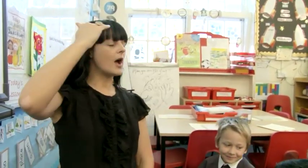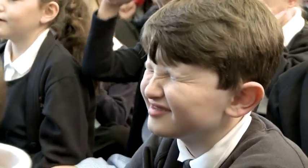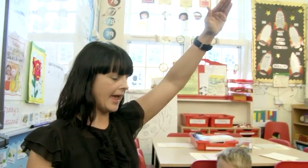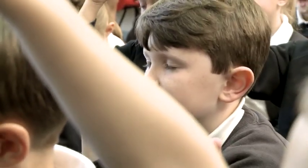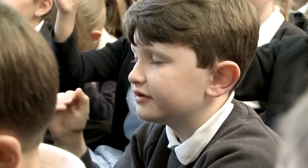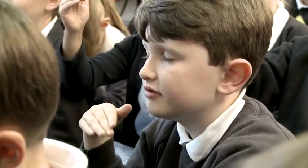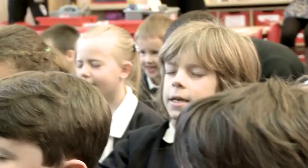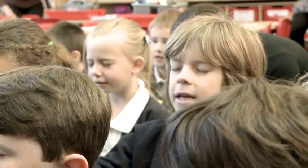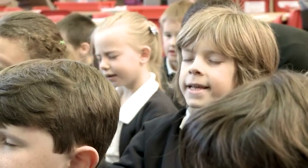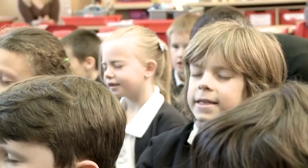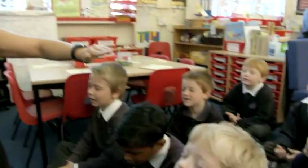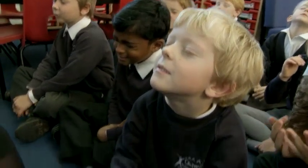Well done. Close your eyes. Hundred square in your head, counting in tens. One ten is ten. Two tens are twenty. Three tens are thirty. Four tens are forty. Five tens are fifty. Six tens are sixty. Seven tens are seventy. Eight tens are eighty. Nine tens are ninety. Ten tens are a hundred.